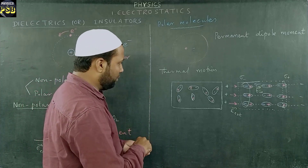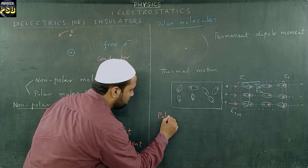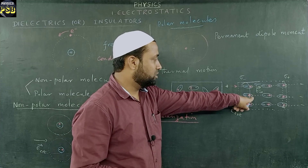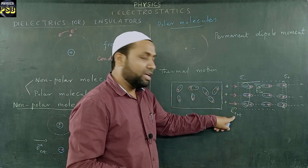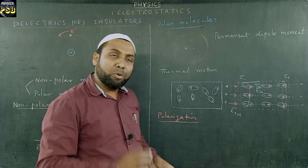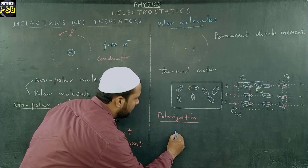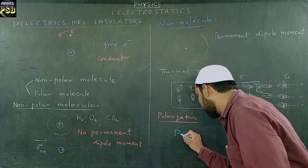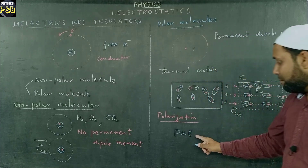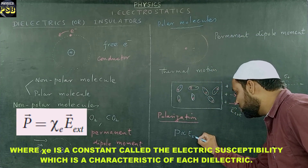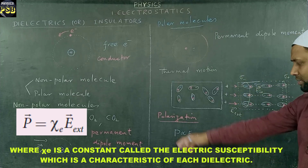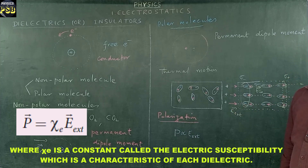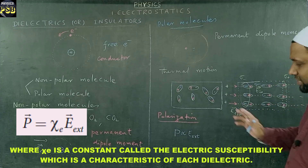The phenomenon of alignment of dipoles in the presence of an external electric field is referred to as polarization. The induced dipole moment P is found to be directly proportional to the magnitude of the external electric field E in which the substance is placed.